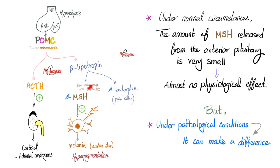Under normal circumstances, the amount of MSH coming out of the anterior pituitary is very small — negligible — and plays almost no physiological role. However, under pathological conditions, when the pituitary is producing tons of POMC and tons of ACTH, it cannot help but secrete tons of MSH as well. This makes a difference. This is why John F. Kennedy had darkened skin: his pituitary was secreting too much POMC, which led to increased MSH, which went to the melanocytes and induced them to secrete more melanin — hashtag hyperpigmentation.